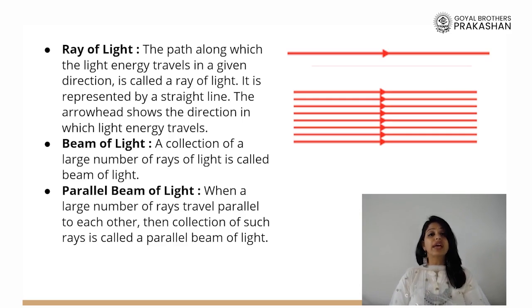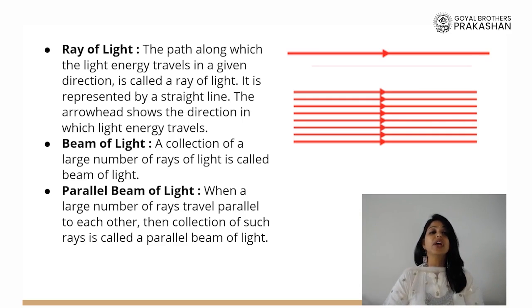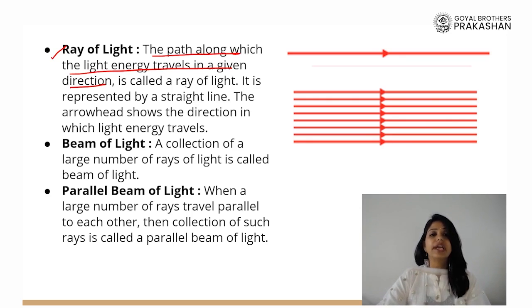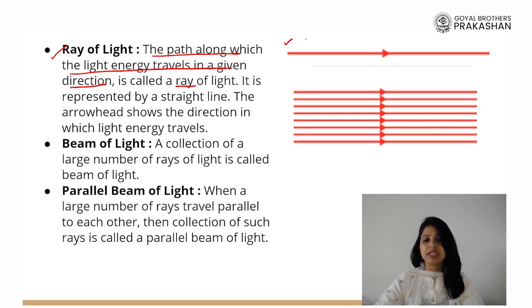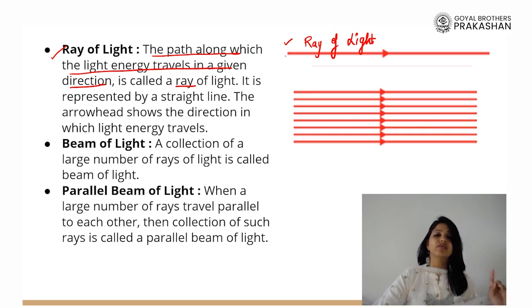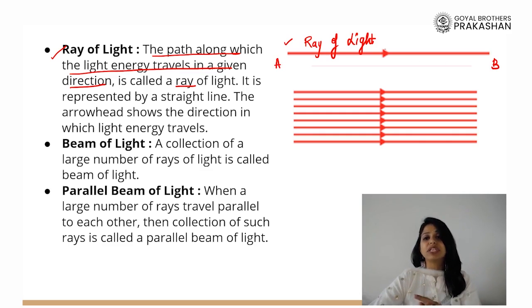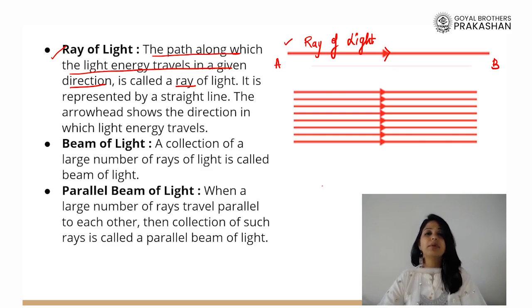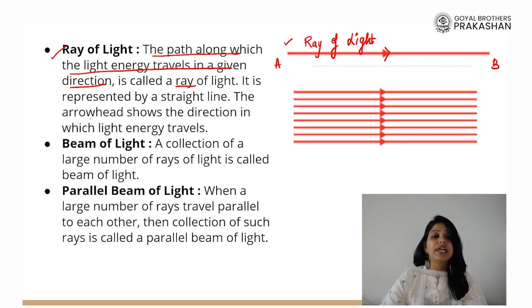So when we talk about how we use different geometrical tools to show how light is traveling, we draw a ray of light to show the path of light. A ray of light is the path along which the light energy travels in a given direction. For example, you can see in the diagram: the light is going from direction A to direction B because the arrow is pointing in that direction. A light ray simply shows the direction in which light is traveling. It is represented by a straight line, and the arrowhead shows the direction of the light energy travel.